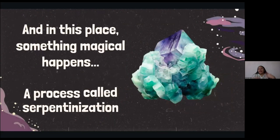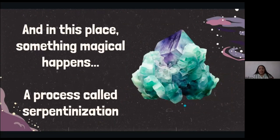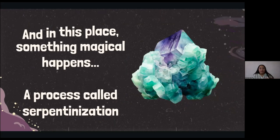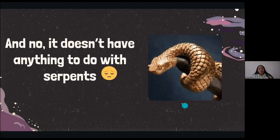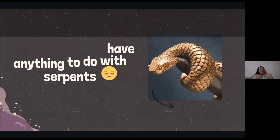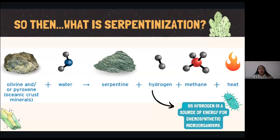In this place, something magical happens: a process called serpentinization — and no, it doesn't have anything to do with serpents. So, what is serpentinization? It's a geological process where different types of rocks rich in olivine and pyroxene, which are minerals usually present in the oceanic crust, react with water and produce serpentine, which is green — and that's why it's called serpentinization.